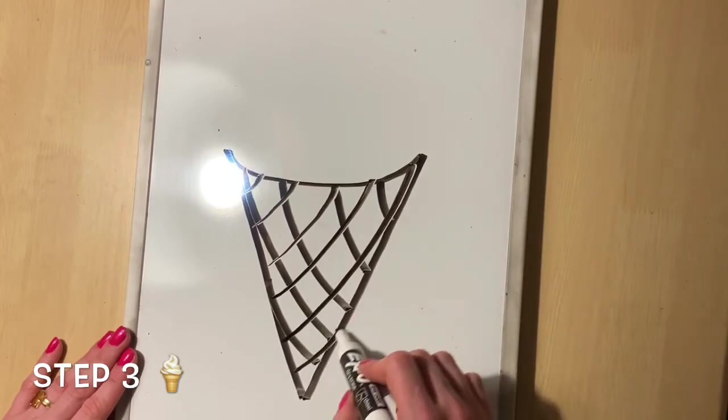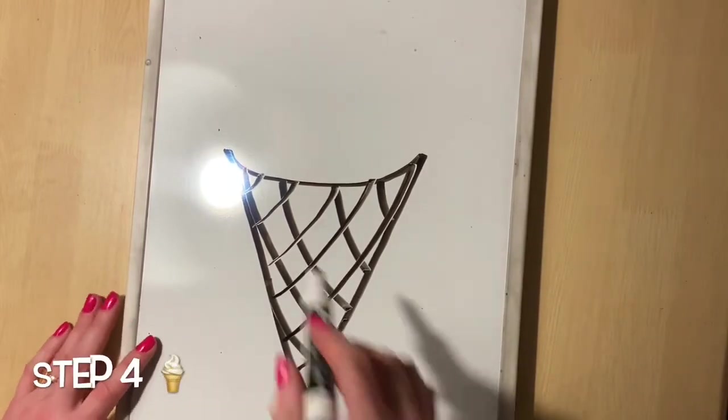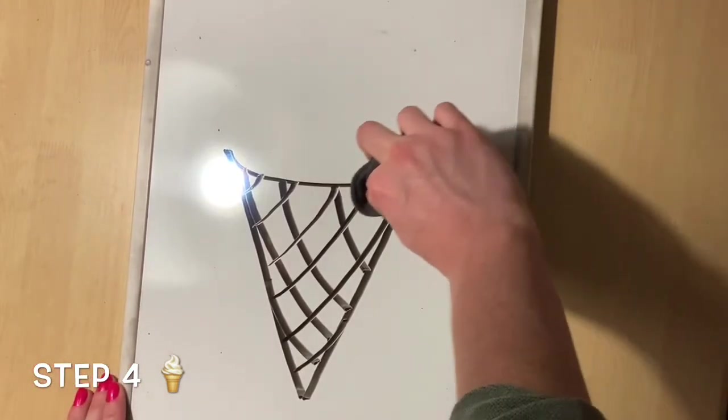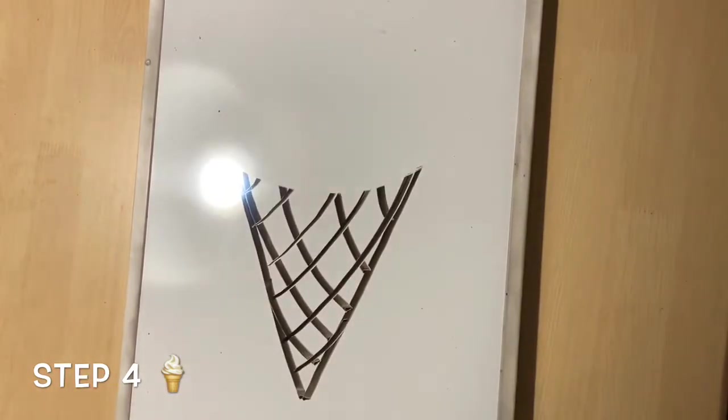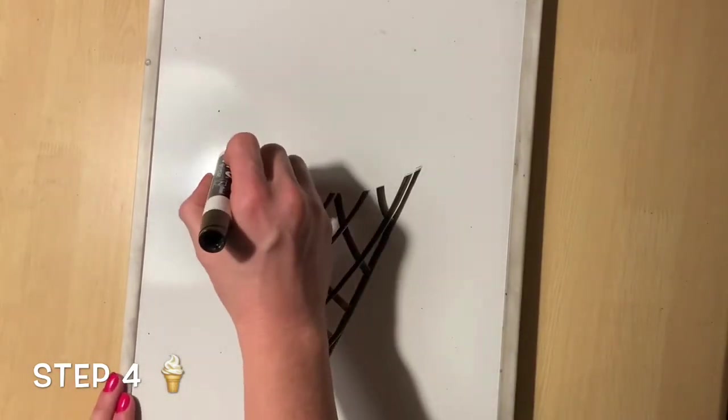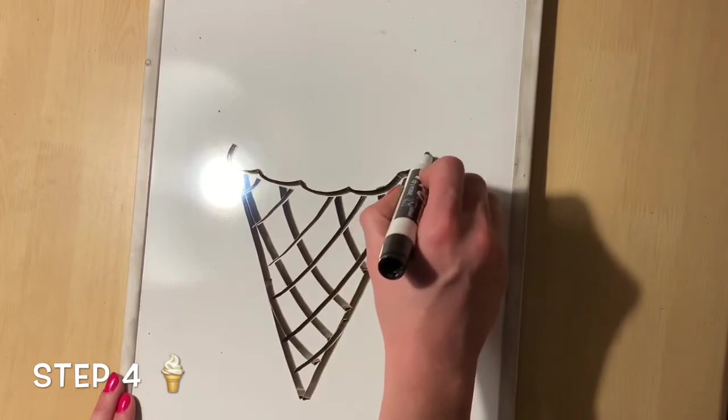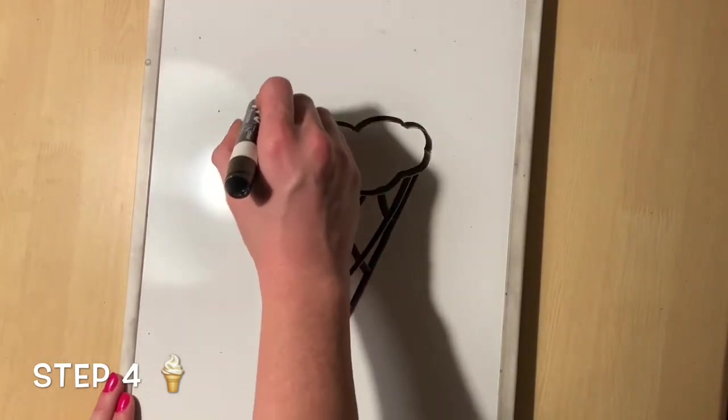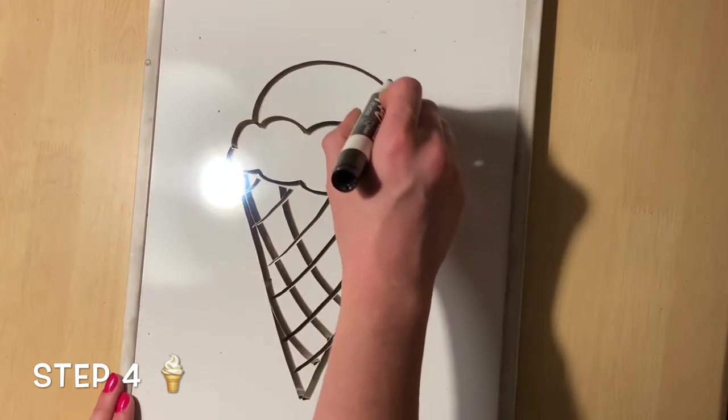Now it's really starting to look like a 3D cone, isn't it? We just need to add the ice cream. There are two ways to add ice cream, a lot like the cupcake. One is to add a cloud on top and a rainbow to create a scoop of frozen ice cream.